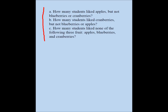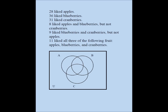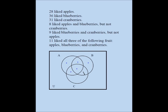We're going to use a Venn diagram to solve this problem. A stands for apple, B for blueberry, C for cranberry. You have to understand that three overlapping circles create eight regions. I marked them with dots and we have to identify what numbers belong to each of those eight regions.